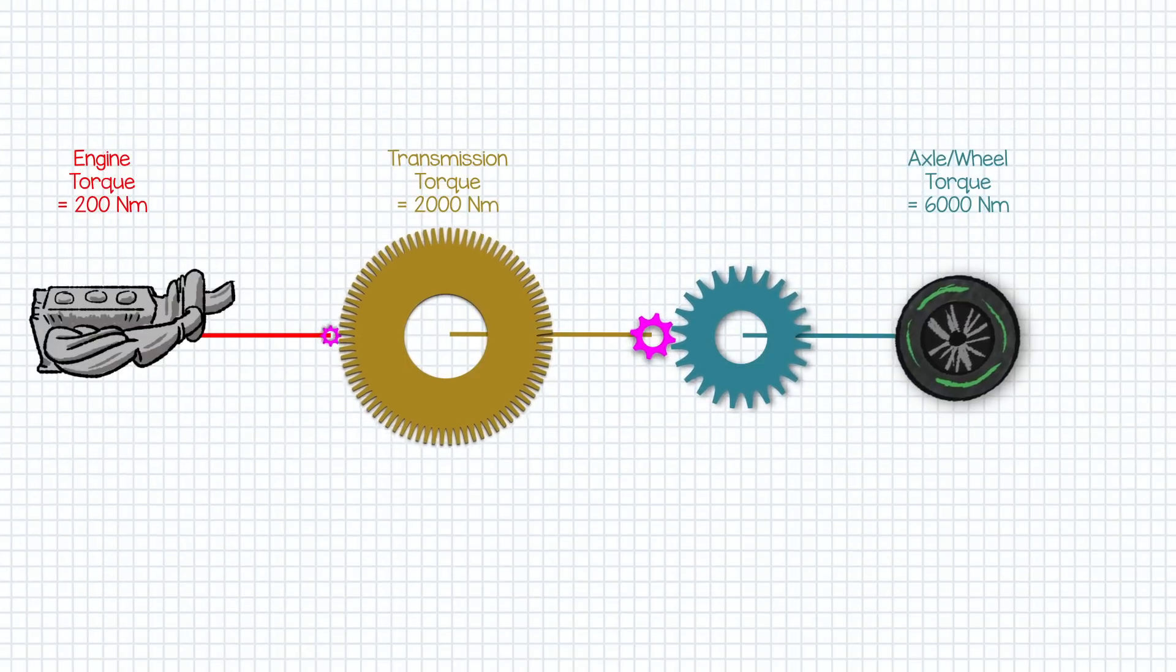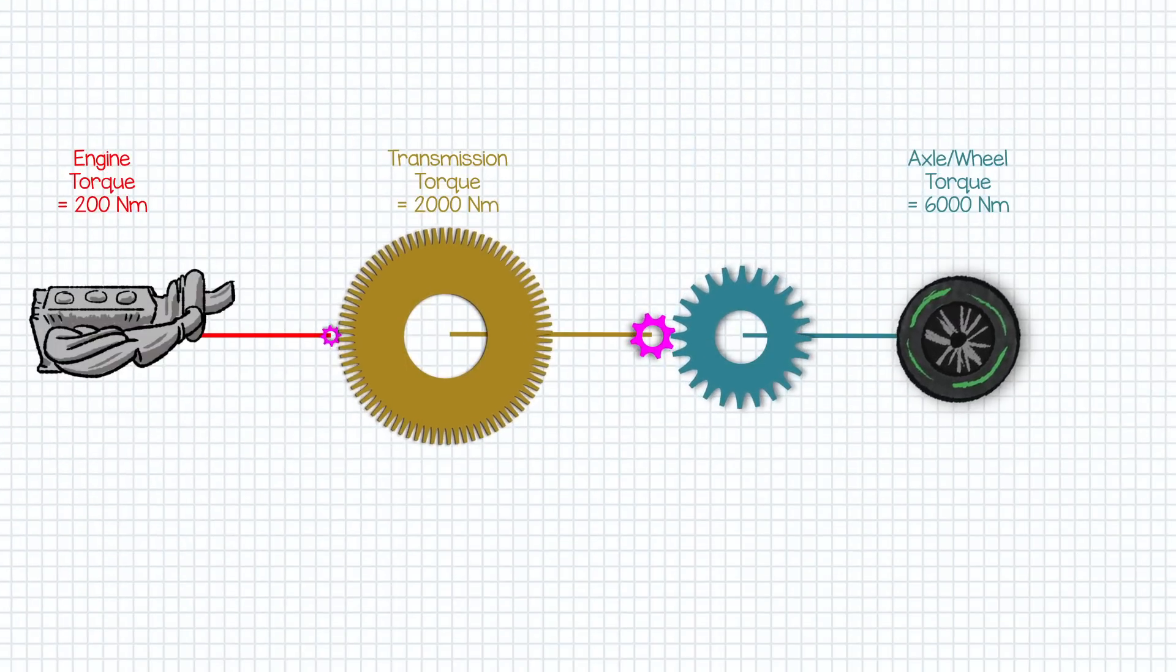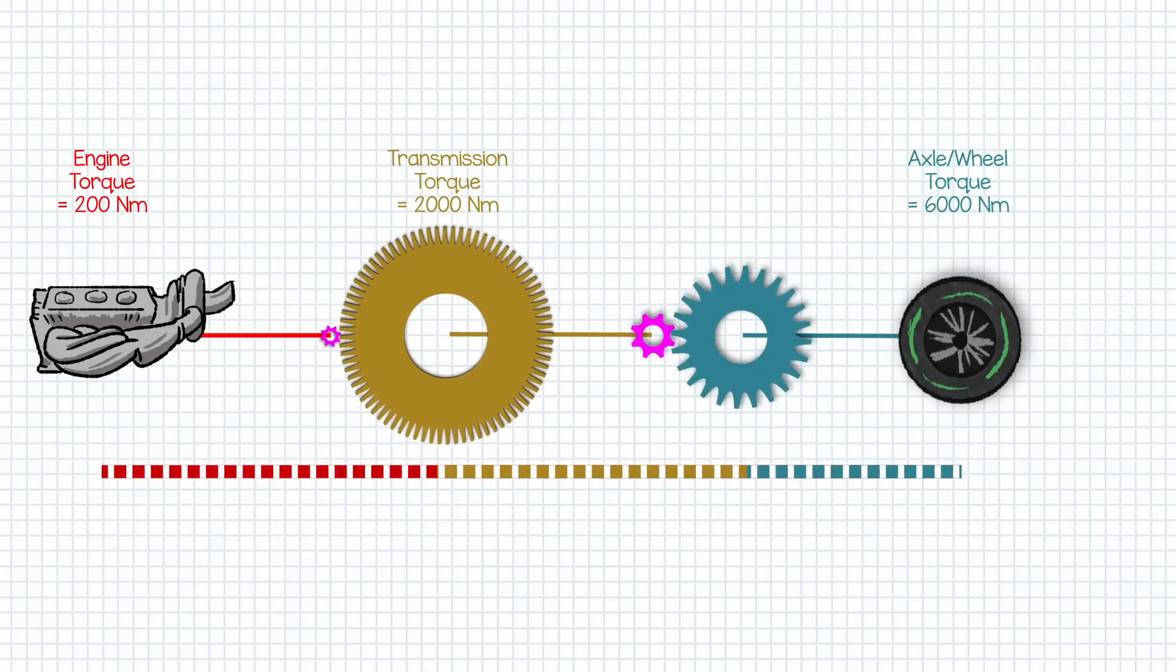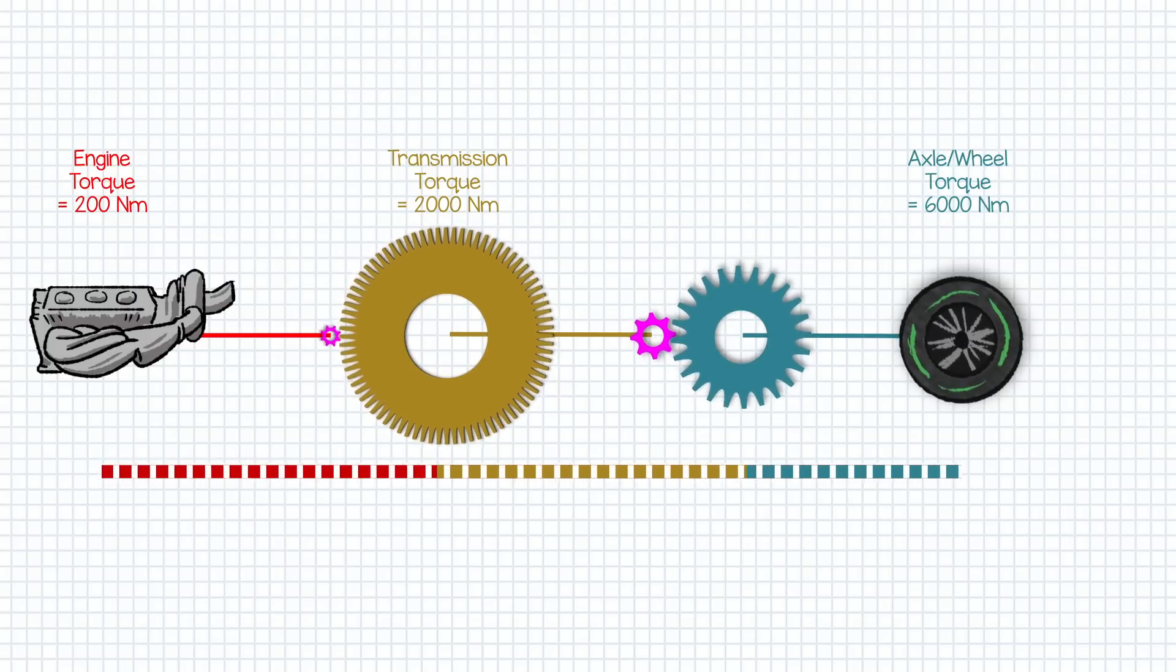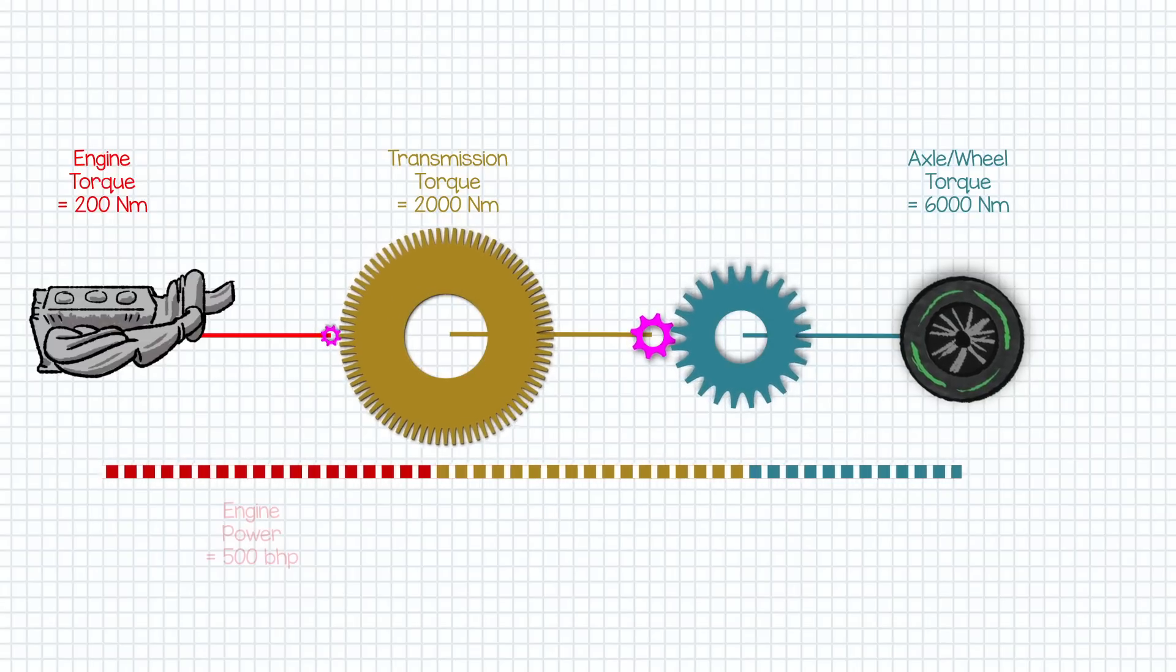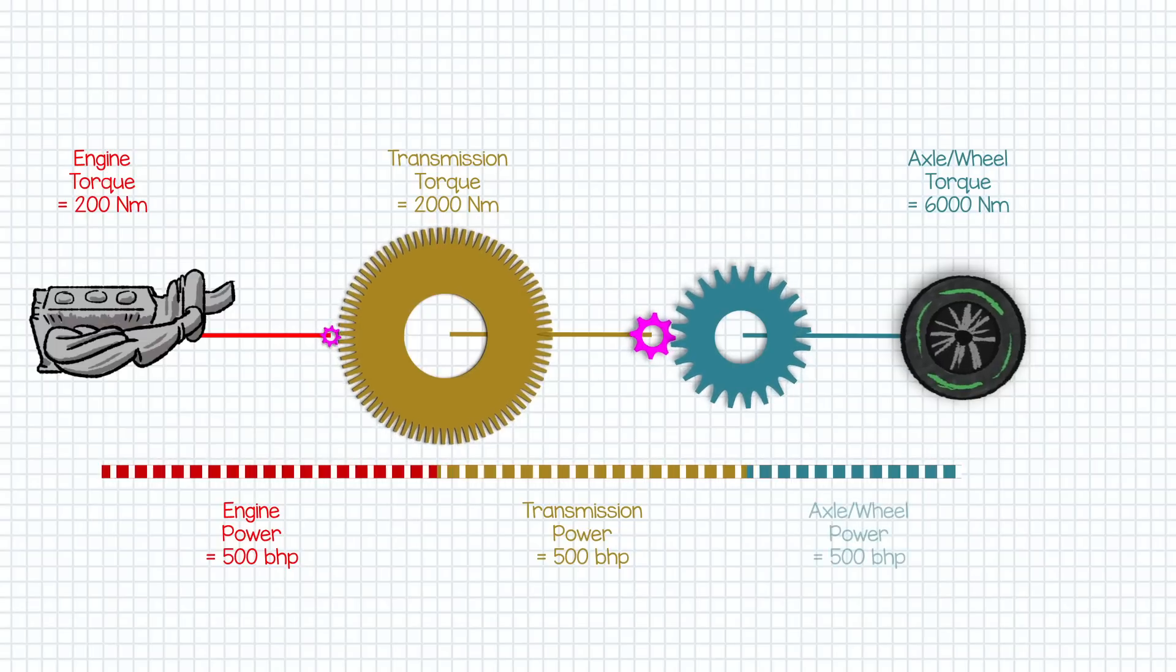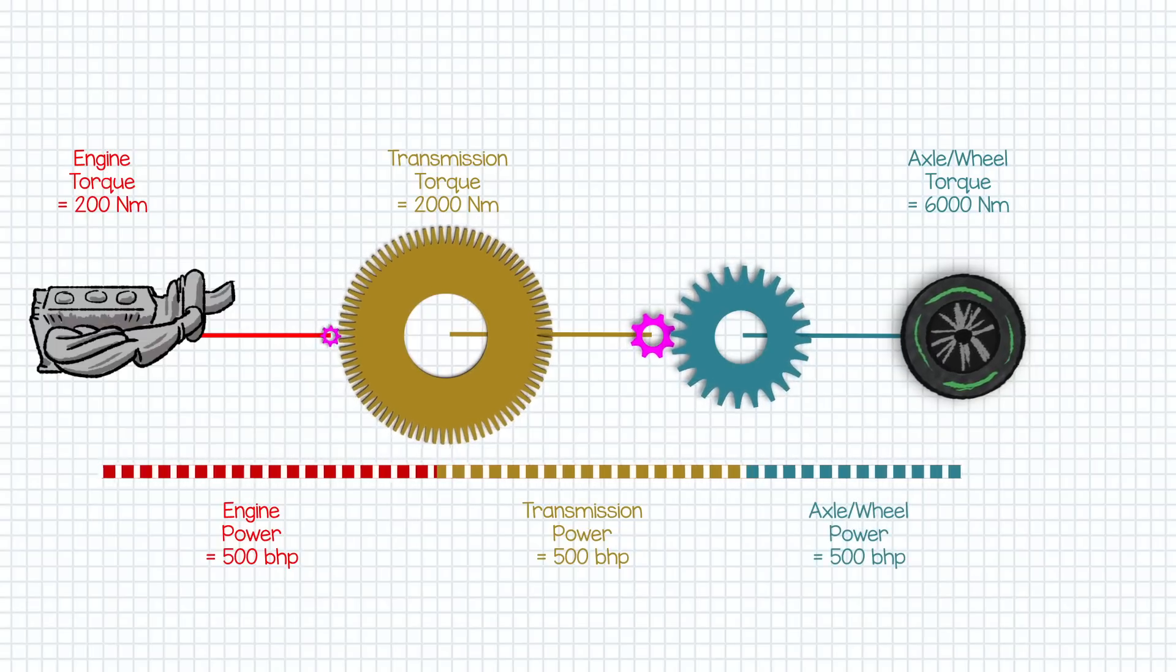So ignoring normal energy losses for the moment, just note that the power of the system doesn't change between the engine and wheels. Power is just the rate at which the engine delivers energy to the wheels. If the engine is putting out 500 horsepower at the crankshaft, it's delivering 500 horsepower at the wheels. Again, we're ignoring any losses due to friction.